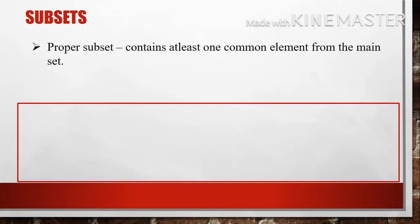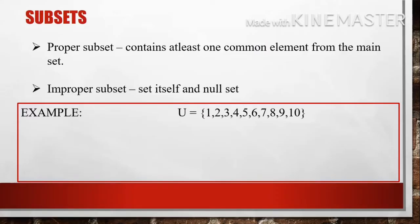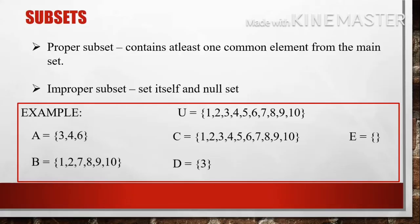Let's now have subsets. There are two types of subsets: the proper subset, which contains at least one common element from the main set, and the improper subset, which is either the set itself or the null set. Example: let the main set be the universal set and the given sets be A, B, C, D, and E. Set A whose elements are 3, 4, and 6 is considered a proper subset because it has only some of the elements from the main set.